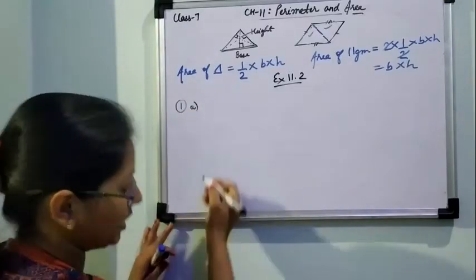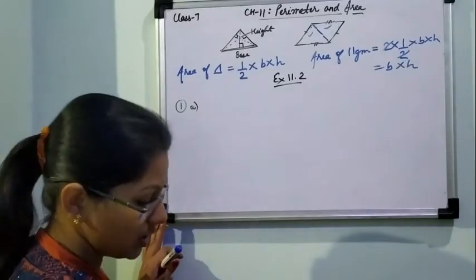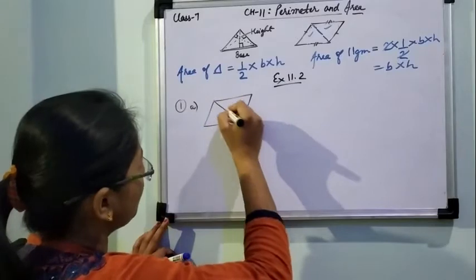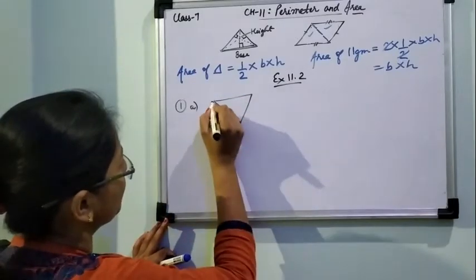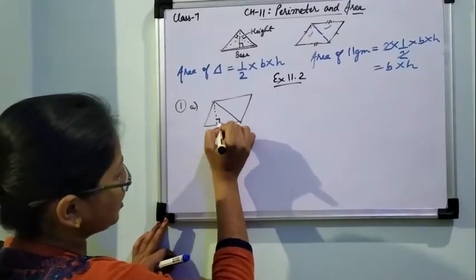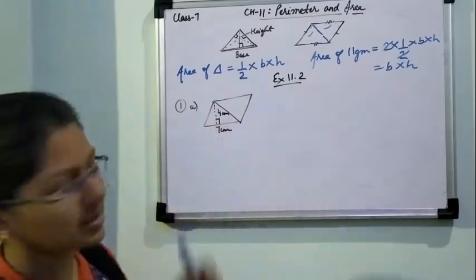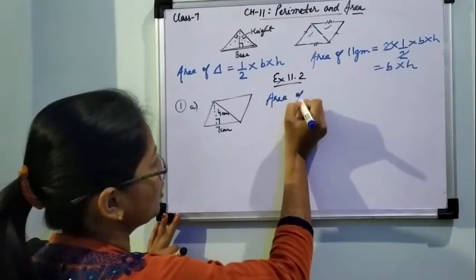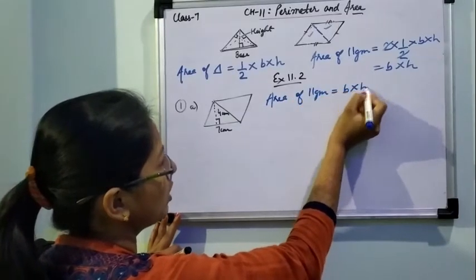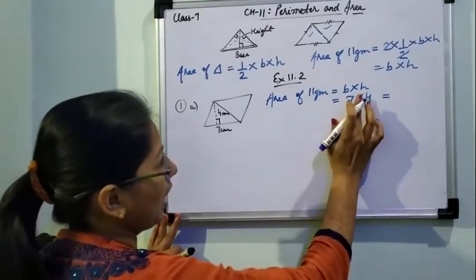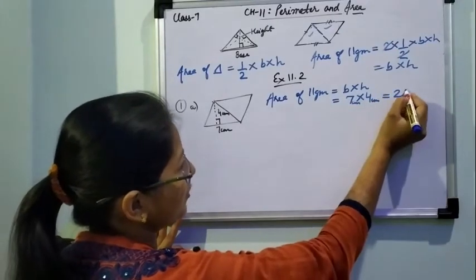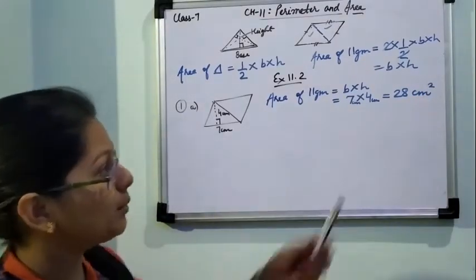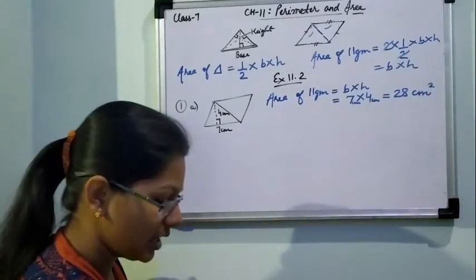Question 1: Find the area of each of the following parallelograms — parts A, B, C, D, and E. In part A, the base is 7 cm and the height is 4 cm. Area of parallelogram = base into height = 7 into 4 = 28 cm square. For part B, base is 5, height is 3, so area = 15 cm square. For part C, base is 2.5 and height is 3.5 — multiply to get the answer. Since it is area, it is always in square units.